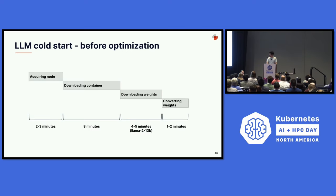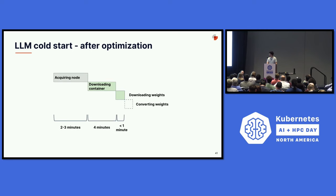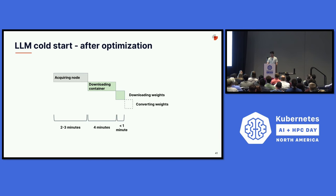Here's a timeline look at what serving looked like beforehand versus after. Before, it took quite a bit of time — all the way from acquiring the node to converting the weights, which took several minutes. After all these optimizations, we got container download down to about four minutes and weight download to under a minute for the warm cache scenario, with no conversion needed. A lot of this overhead from acquiring the node and downloading the container can be eliminated if you don't autoscale your nodes, but we don't want to keep nodes around for very long because they incur a lot of cost.